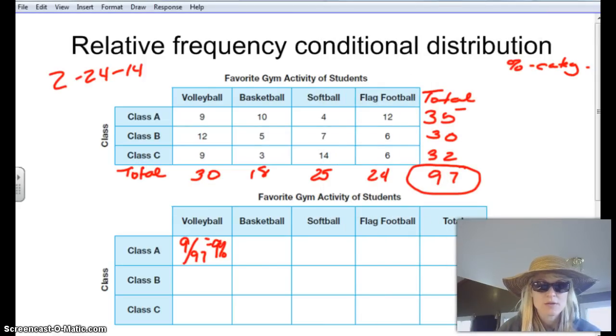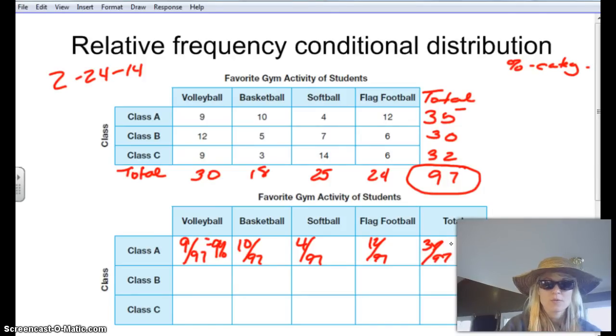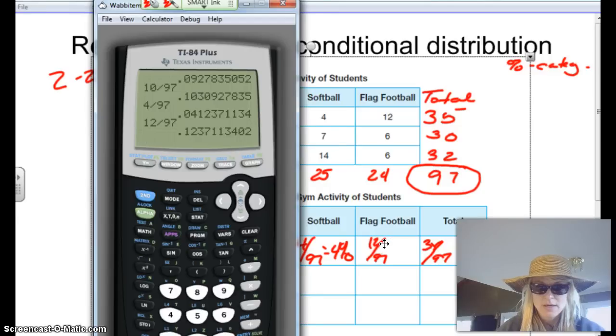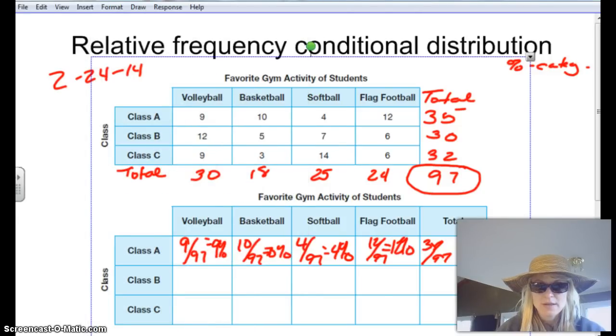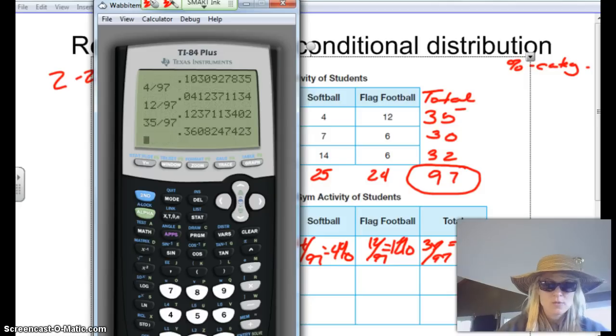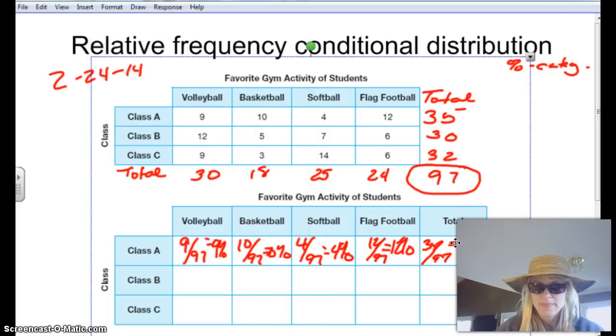So then if I look at the basketball, there's 10 kids in class A that play basketball out of the total of students of 97, and then I have 4 kids that play softball out of the 97 students. Then I have 12 kids that play flag football out of the 97, and then I have 35 students in class A out of the total. So let's go through, and I'm going to pause the video and figure out the percents. I've got 12 divided by 97, and that's going to give me 12% here, and then I'm going to do the last one, which is 35 divided by 97, which will give me 36%.